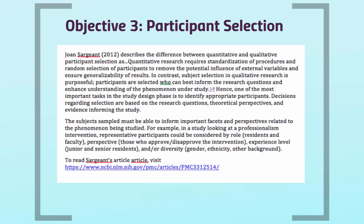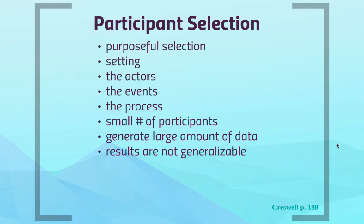The subjects sampled must be able to inform important facets and perspectives related to the phenomenon being studied. For example, in a study looking at professionalism intervention, representative participants could be considered by role — residents and faculty — perspective, those who approve or disapprove of the intervention, experience level — junior and senior residents — and diversity: gender, ethnicity, or other background. To summarize, in qualitative research you want to purposefully select participants who you can observe in their natural setting, who participate in the events or phenomenon you want to study, and who can describe the processes you are investigating.